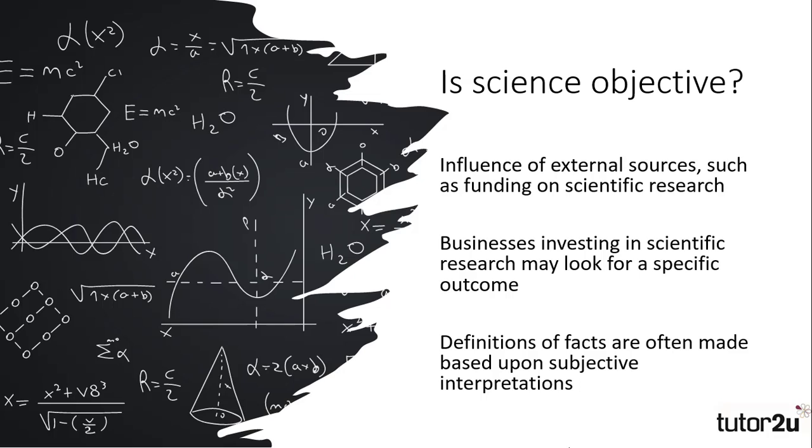A second challenge to the objectivity of science comes from those observing facts. As individuals may observe from different perspectives, subjective judgments may be made, or errors of judgment occur, meaning that what is seen to be an objective judgment is in fact an individual interpretation of an event. If this were the case, then it could be argued that science is socially constructed.